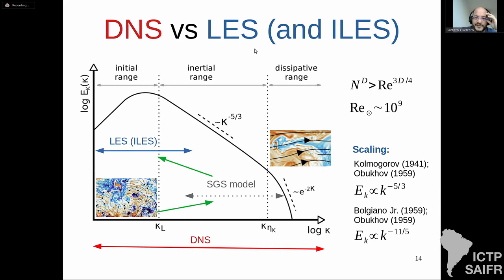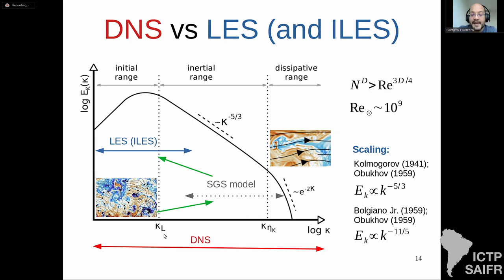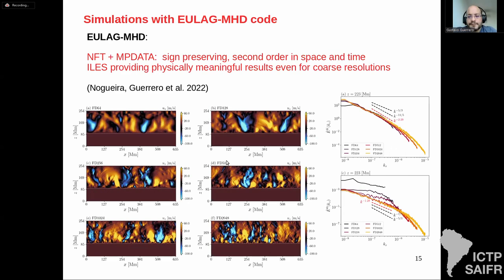Instead we use large eddy simulation (LES) or implicit LES, which have subgrid-scale models that parameterize the contribution of unresolved scales to resolved scales based on known turbulence properties. I have been working with ILES, which uses a subgrid-scale model implicit in the numerical method, making it computationally efficient. Most criticism from referees is that it's hard to know how the subgrid-scale method actually works — this is a difficulty even for explicit LES, and even harder in astrophysics compared with meteorology.